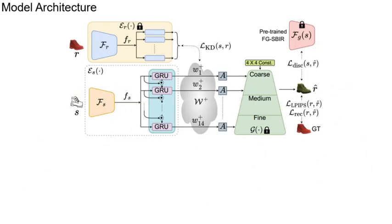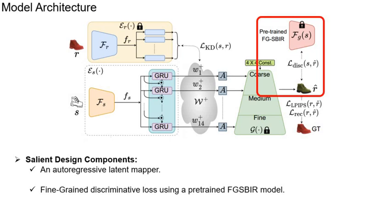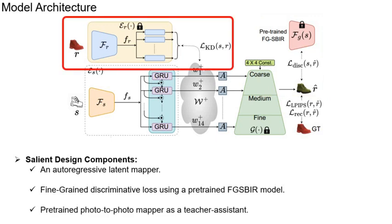To achieve this quality of output, we design a few salient components. First, we model the sketch encoder in an autoregressive manner, preserving sequential dependence among the sketches. Second, apart from the standard reconstruction loss, we propose a novel fine-grained discriminative loss. And finally, we employ a pre-trained photo-to-photo mapper as a teacher assistant for further guidance.